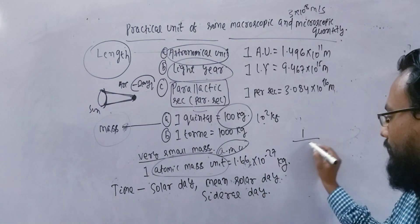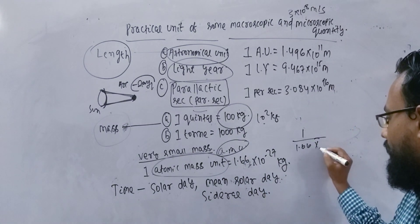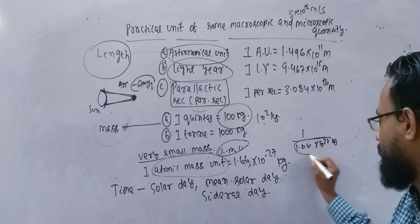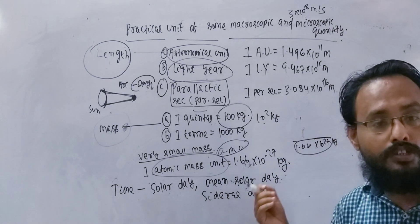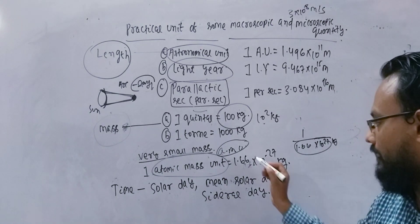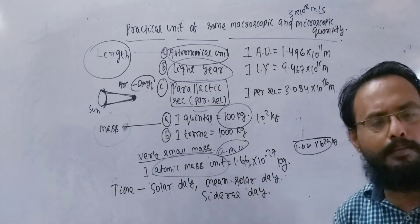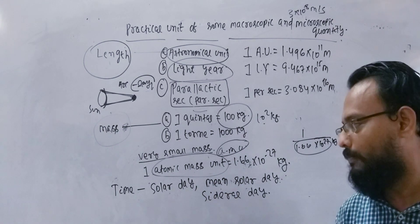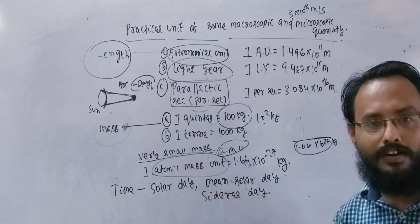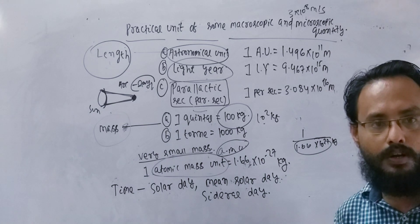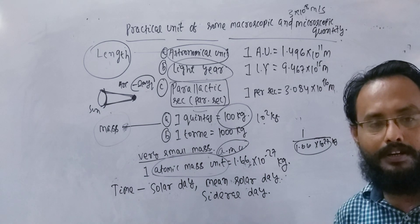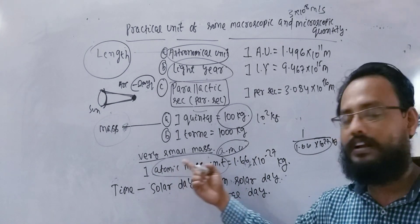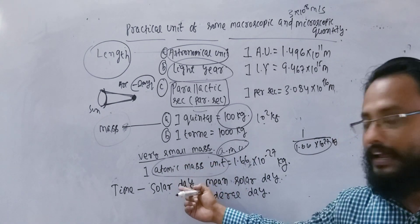The atomic mass is 1.66 into 10 to the power minus 27 kg. The atomic mass is divided by 10 to the power minus 27 kg. We will put the chemical mass to AMU. Let us take the atomic mass and molecular mass. We will put the atomic mass to the electron-proton of atomic mass. So not kg — we call it AMU.